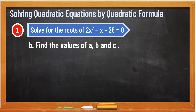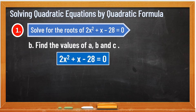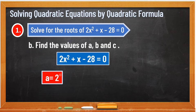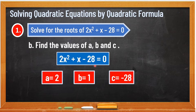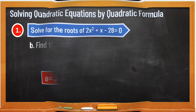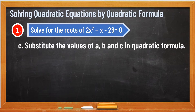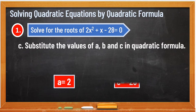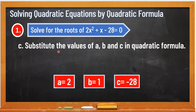After that, we can now find or identify the values of a, b, and c. Our a is found on the first term. So a is 2, b is 1, and c is negative 28. Now that we know a, b, and c, the next or third step is to substitute the values of a, b, and c in the quadratic formula.